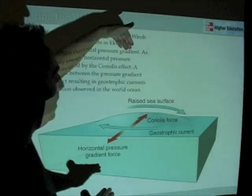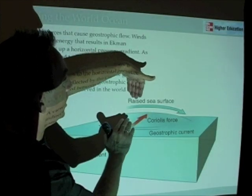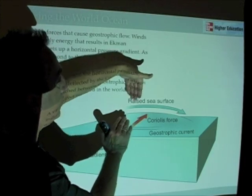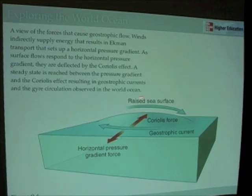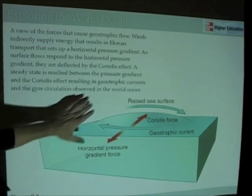And so, as a result, because of this central gyre-directed Ekman Transport and the balance between that and the horizontal pressure gradient, what we get is the circulation of ocean currents around the gyres. We get this clockwise circulation in the northern hemisphere, counterclockwise in the southern hemisphere.